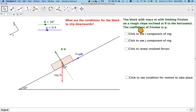In this video we've got a block with mass m with limiting friction on a rough slope inclined at theta to the horizontal. The coefficient of friction will be mu.